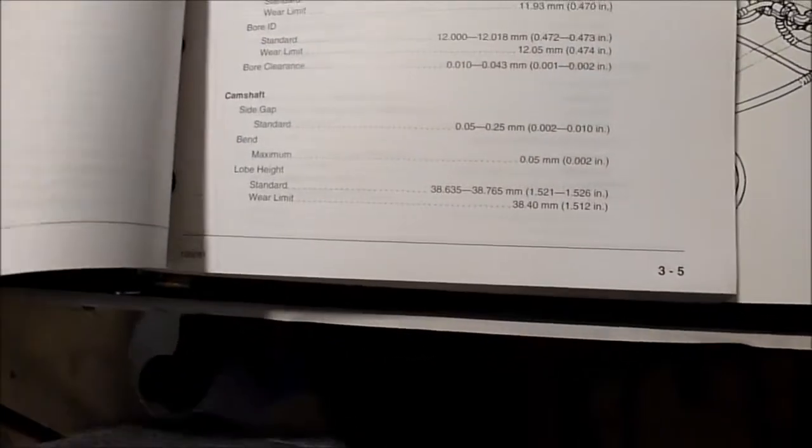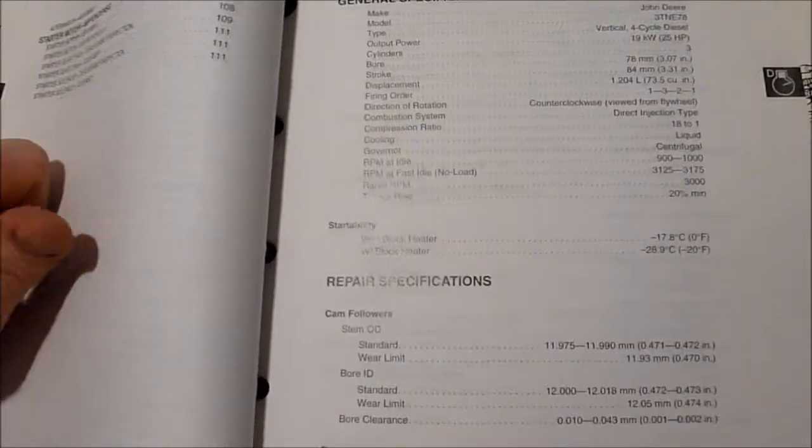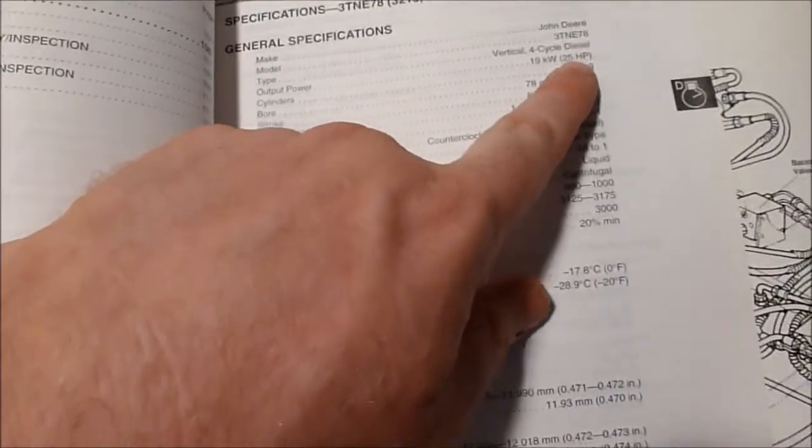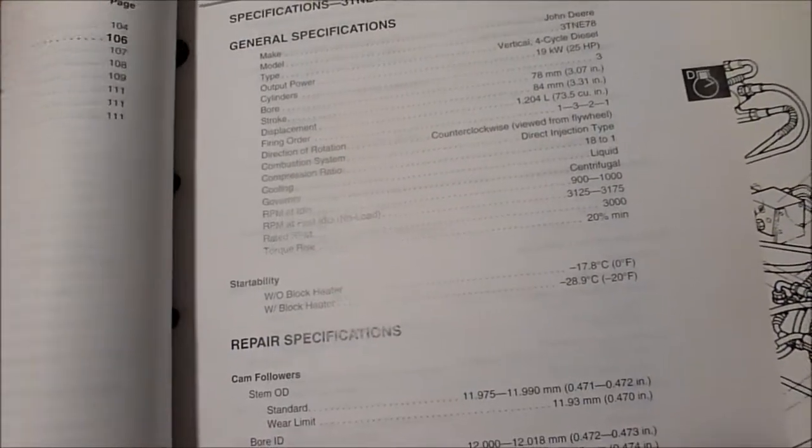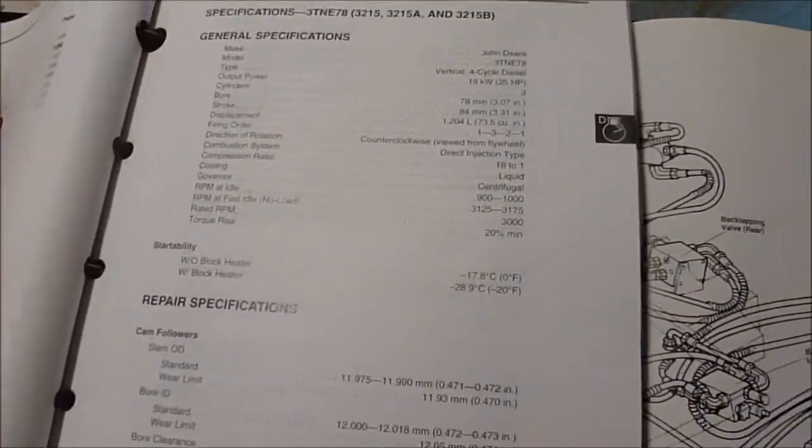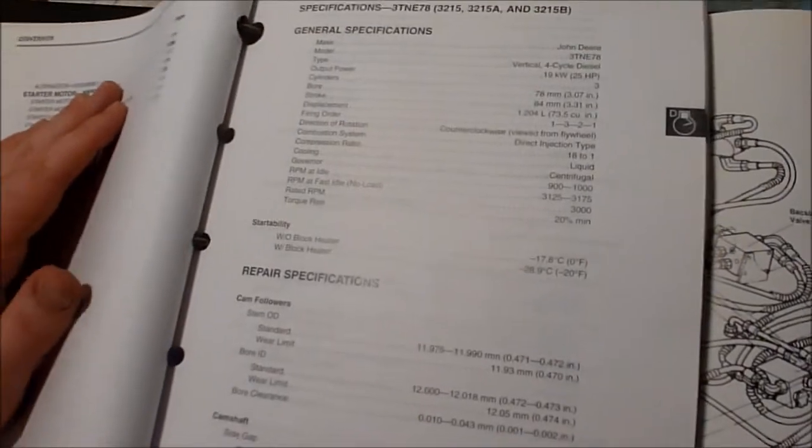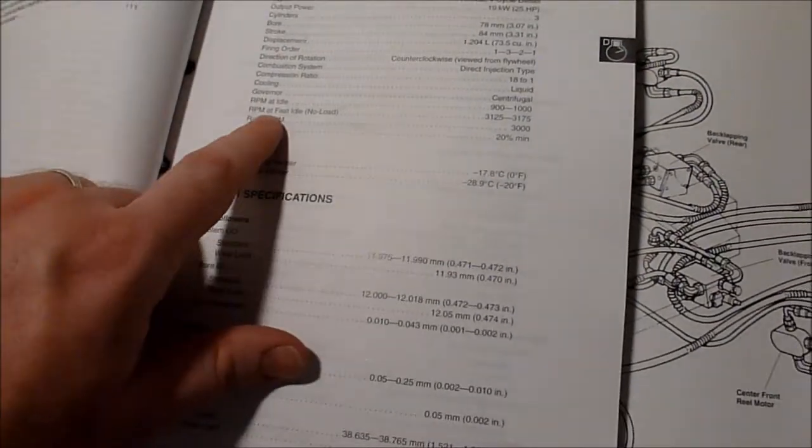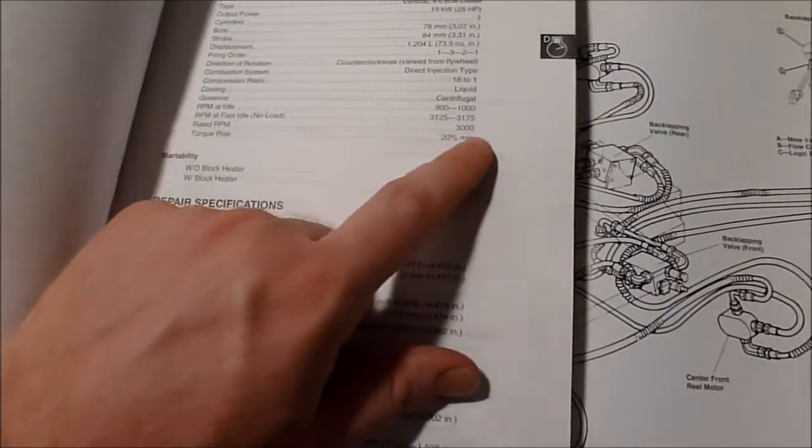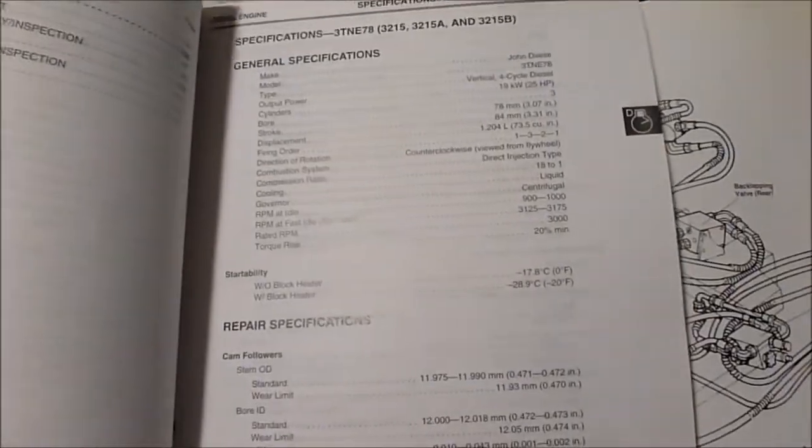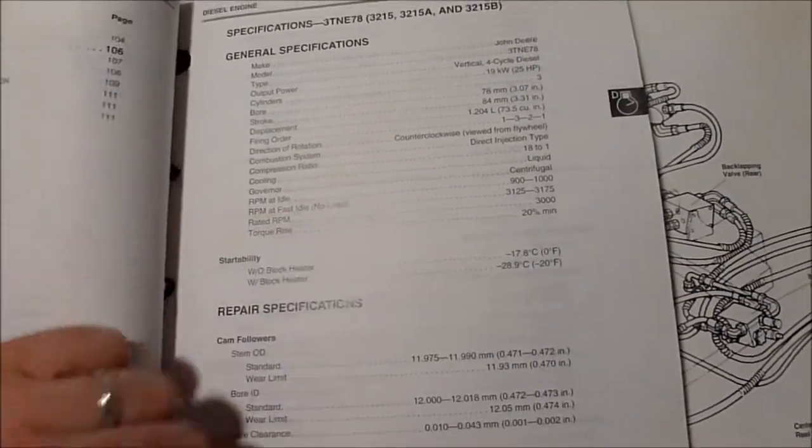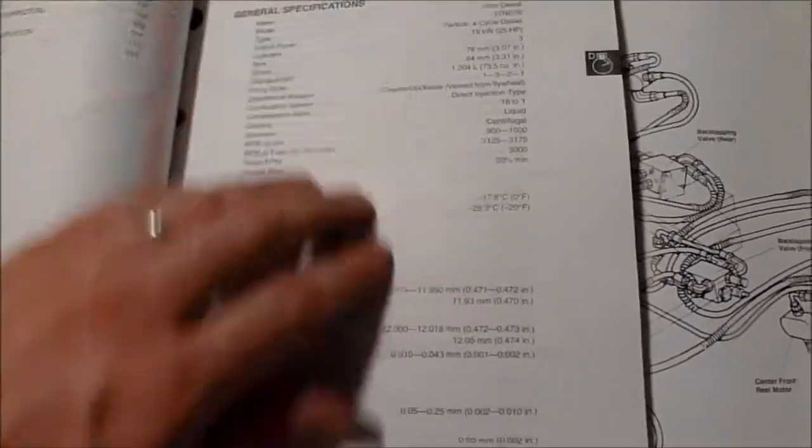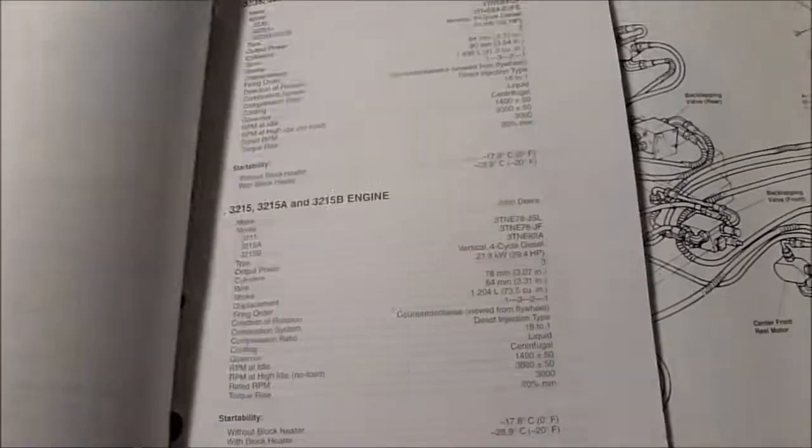Here's the confounding information: specifications for the 3TNE78. Right here it says 25 horsepower, so I don't know what to believe, whether it's 25, 29.4, or 31. We're going to say it has between 25 and 31 horsepower, which is plenty for anything I'm going to do. Rated RPM is 3,000. Fast idle no load is 3125 to 3175. I'll be testing all of that as I go forward.